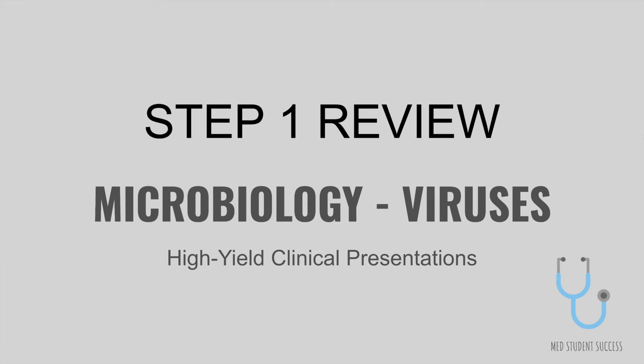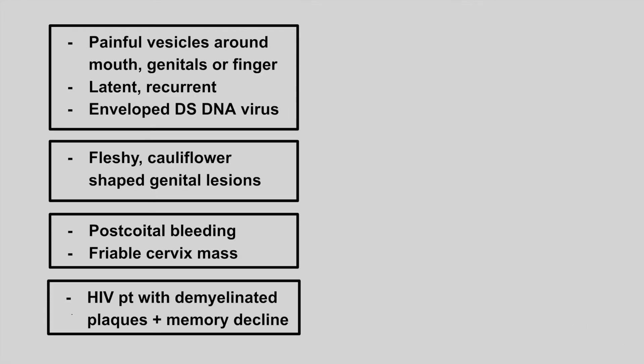Today I'll be doing a high yield Step 1 review focusing on viruses. The first patient is going to have painful vesicles around the mouth, genitals, or finger. It's going to cause a latent recurrent infection and it's an enveloped double-stranded DNA virus. This is HSV, the herpes virus.